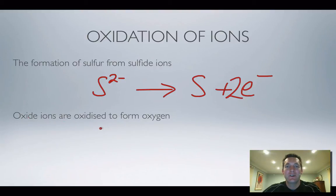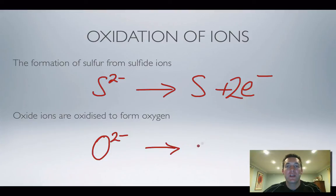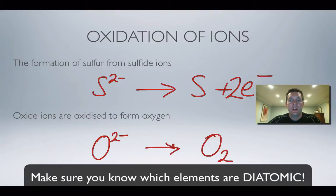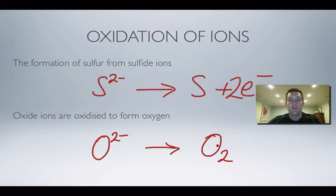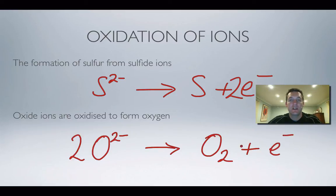Next: oxide ions are oxidized to form oxygen. Oxide is also in group six, so it has a 2− charge. We must remember oxygen has the formula O₂, not O. So we need two oxide ions to provide two oxygen atoms to make the molecule. We put the electrons on the right, and since we have four minus on the left, we need four electrons to balance the charge.